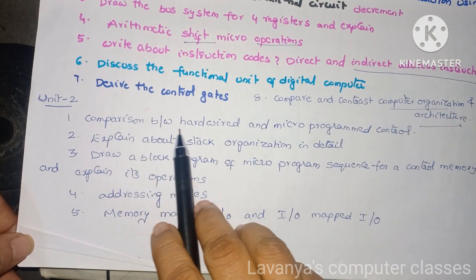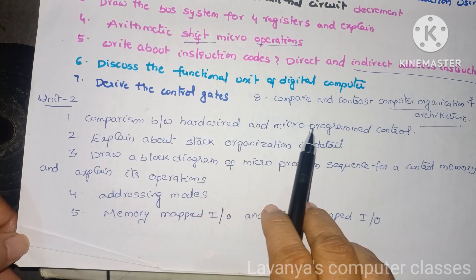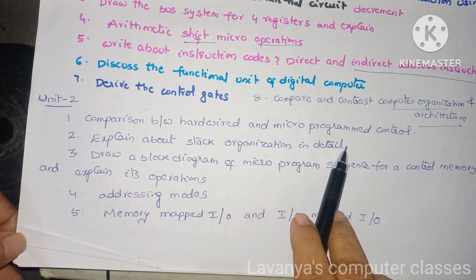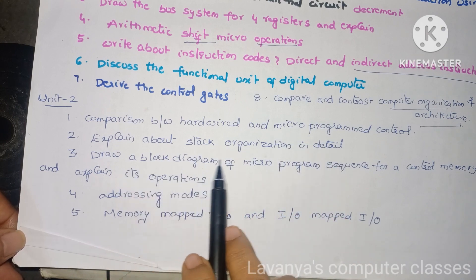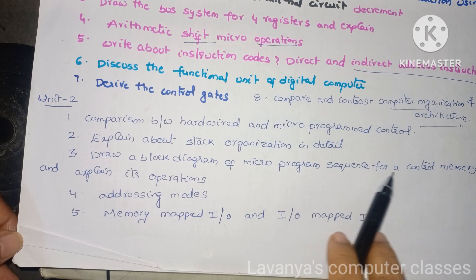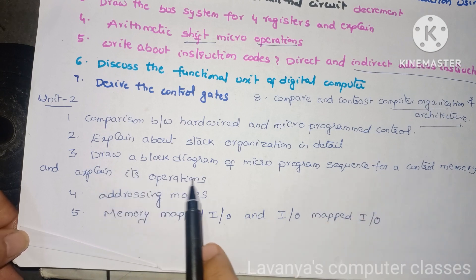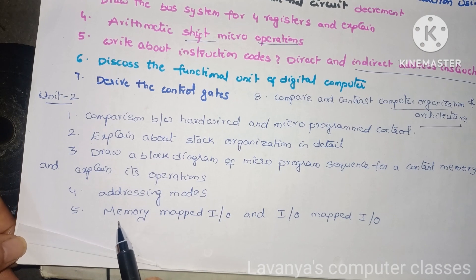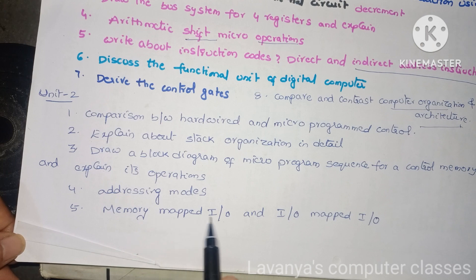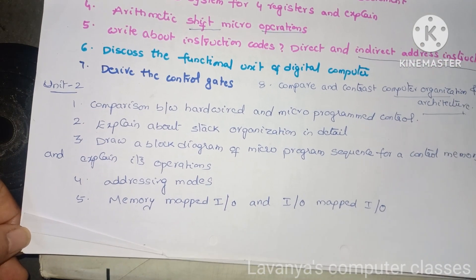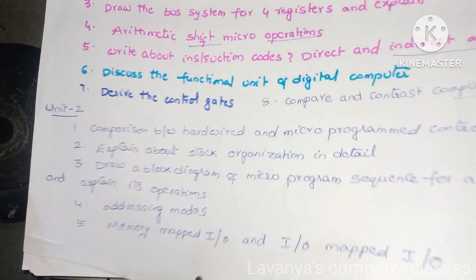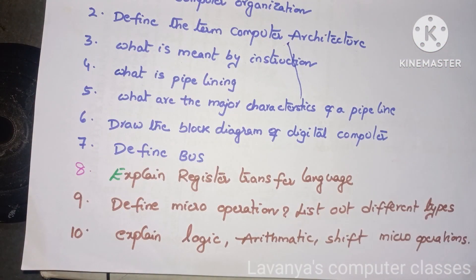Unit 2 questions: comparison between hardwired and microprogrammed control. Second one is: explain about stack organization in detail. Draw a block diagram of microprogram sequencer for a control memory and explain its operations. Next, explain about addressing modes and explain different types of addressing modes. And next one is: explain about memory-mapped IO and also input/output mapped IO. These are the long answer questions in Unit 2.